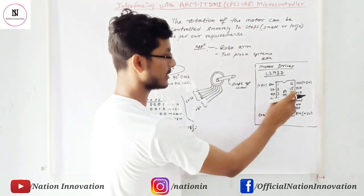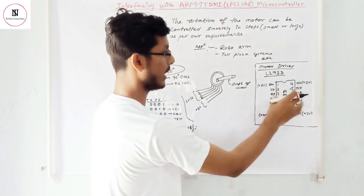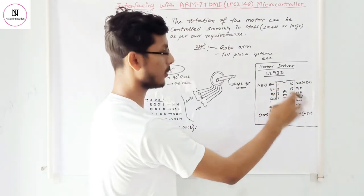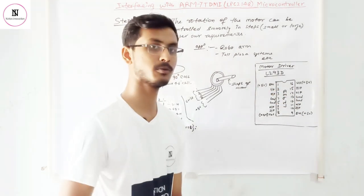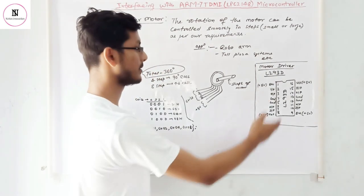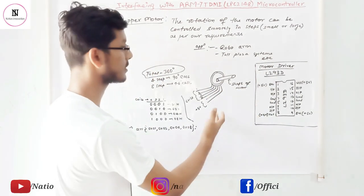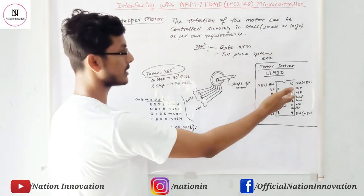And the remaining 4 and 5 and 12 and 13 are ground pin and remaining these pins are the output. That is 4 output and 4 input. Means we can control two motors with the help of single IC. And here we are using stepper motor with the help of L293D.